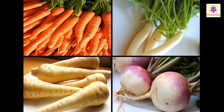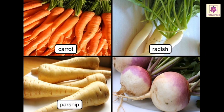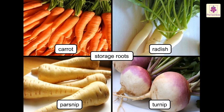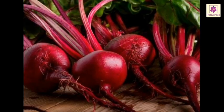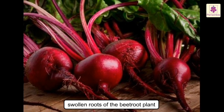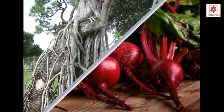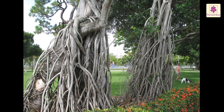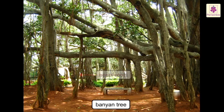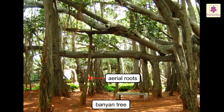Many plants use their roots to store food, causing the roots to grow thick. Such roots — like carrot, radish, parsnip, and turnip — are called storage roots. A lot of our sugar comes from the swollen roots of the beetroot plant. Not all roots grow underground; some roots grow above the ground. These are called aerial roots. The banyan tree has roots which grow down from its branches.